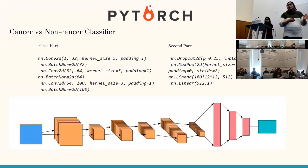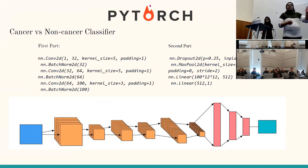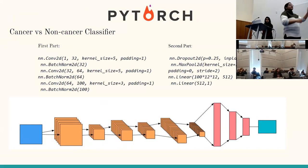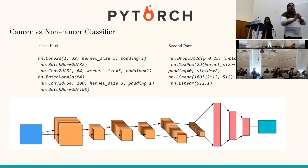Once we trained the classifier, we used guided back propagation to identify the top contributing genes. Basically, once we have the classification and the weights that resulted from training the model, guided back propagation walks back through those weights and identifies which inputs require the smallest amount of change to result in a different classification. That is how we decided which genes are the biggest contributors to classifying something as cancerous or non-cancerous.